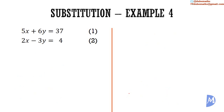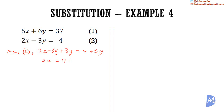A fourth and final example. We have 5x plus 6y is equal to 37 — equation 1 — and 2x minus 3y is equal to 4 — equation 2. We're going to make x the subject of the formula from equation 2. Adding 3y to both sides, negative 3y plus 3y is equal to 0, so we get 2x is equal to 4 plus 3y. Dividing both sides by 2, x is equal to (4 plus 3y) over 2.